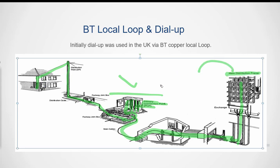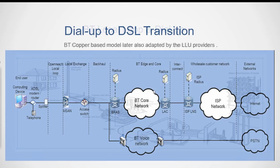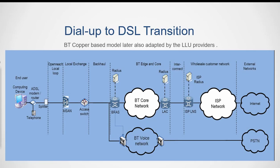From the main distribution frame, equipment like the DSLAM — Digital Subscriber Line Access Multiplexer — and later the MSAN were used to provide broadband to households in the UK. This was essentially a hybrid model based on both dial-up and broadband, mainly owned and operated by BT.